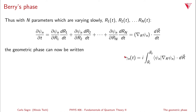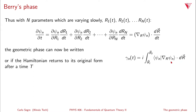We can now write the geometric phase differently. Substituting in for ∂ψₙ/∂t, we get γₙ(t) = i times the integral from r⃗ᵢ to r⃗_f of ⟨ψₙ | ∇_r ψₙ⟩ · dr⃗. If the Hamiltonian returns to its initial form at time T, we can write that as a closed loop integral: γₙ = i ∮ ⟨ψₙ | ∇_r ψₙ⟩ · dr⃗.